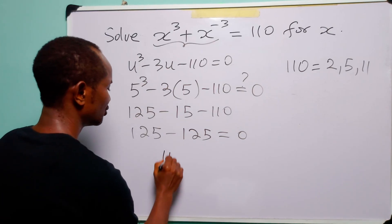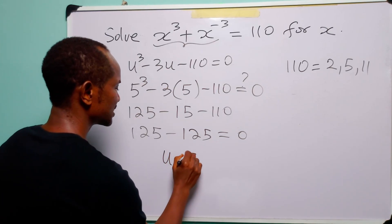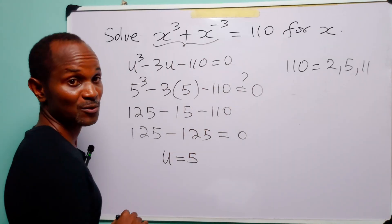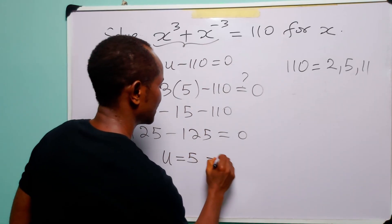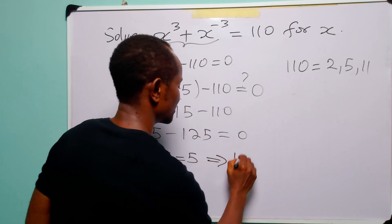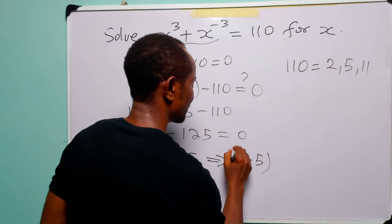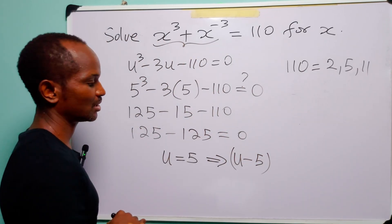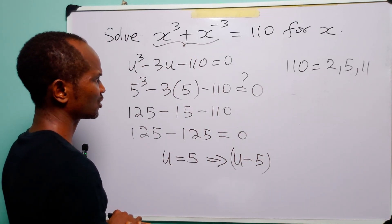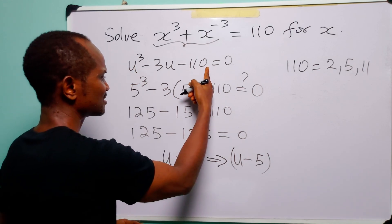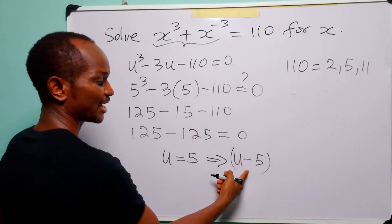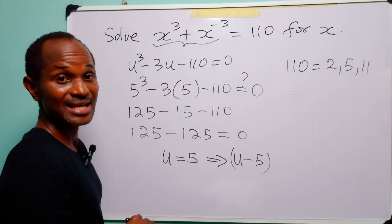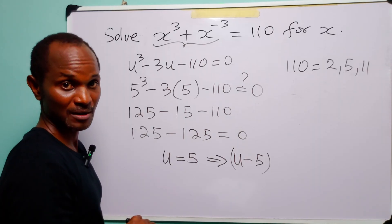Since u = 5 satisfies the equation, (u − 5) is a factor of the cubic. To find the other factor, we divide the polynomial by (u − 5) using synthetic division.